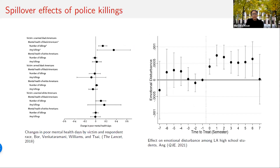Links between the criminal justice and health system go beyond incarceration or infectious disease. In a Lancet study by Jacob Bor and colleagues, using a difference-in-differences specification, the authors find that Black Americans exposed to one or more police killings of unarmed Black people in their state of residence in the past three months reported significantly more poor mental health days. A recent article in the Quarterly Journal of Economics by Desmond Ang finds similar results using detailed data on officer-involved killings and student outcomes in Los Angeles: exposure resulted in significant increases in emotional distress, which persisted for six semesters and was accompanied by declines in student GPA, high school completion, and college enrollment.